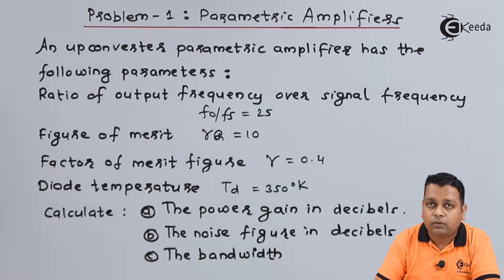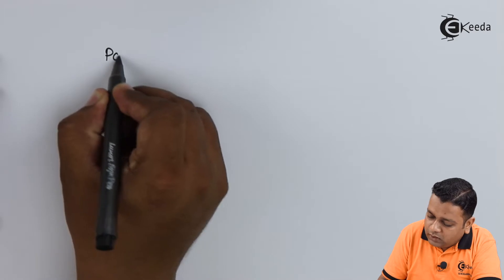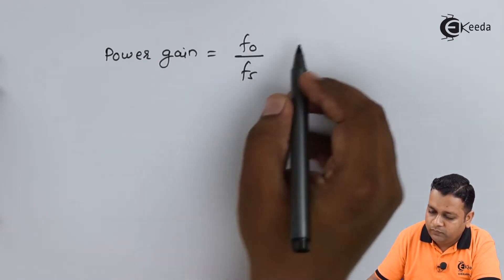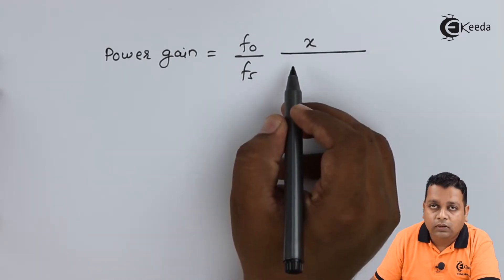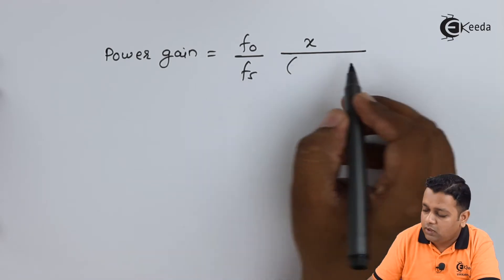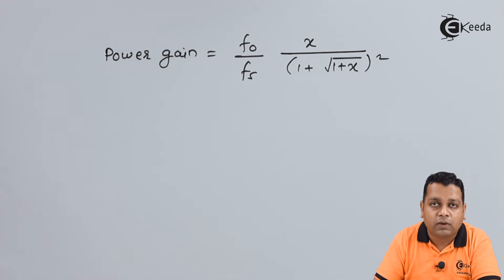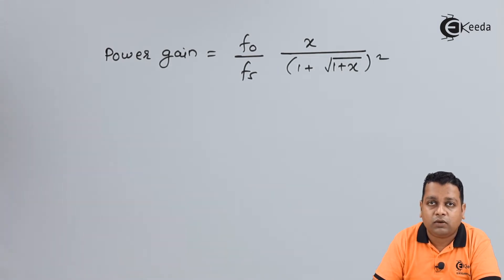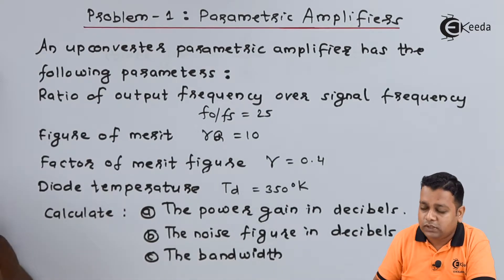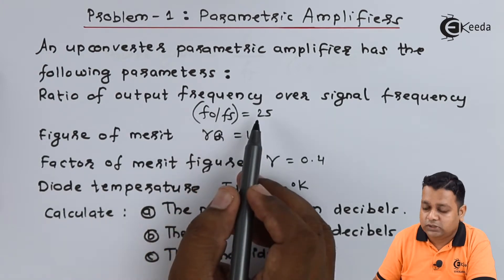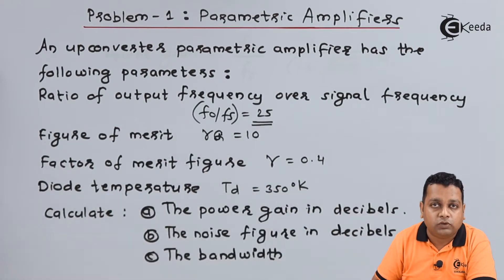Let us have computation of the answer for part A. We are required to compute the power gain. As per the formulation, the power gain equals f₀/fₛ multiplied by the ratio where the numerator is x and the denominator is the bracket (1 plus square root of 1 plus x), squared. From the given values, we can directly use the ratio f₀ by fₛ; the individual values are not given but the ratio is given as 25.